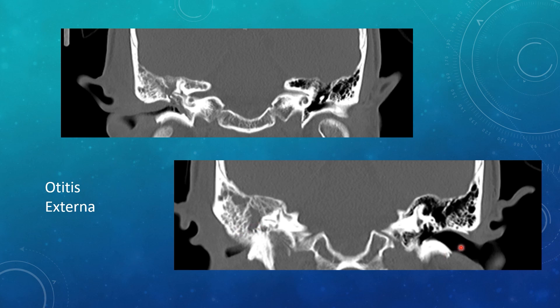To compare it to the normal side, you see a nice air-filled external auditory canal, very thin mucosa along the surface, and you can see just a very thin tympanic membrane on the left side.